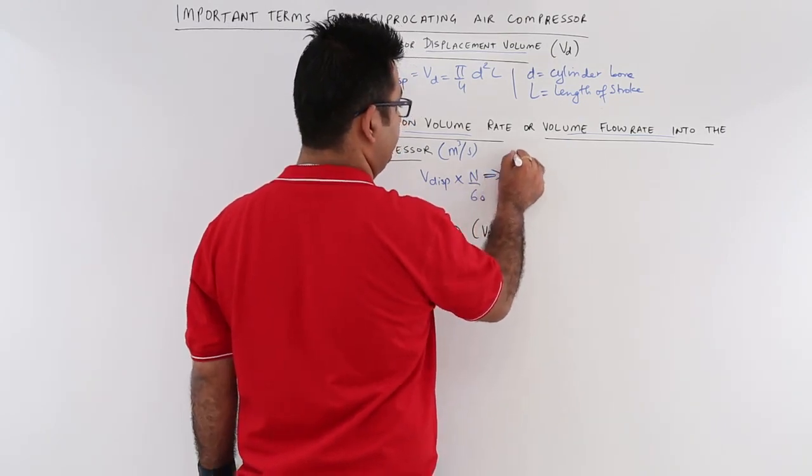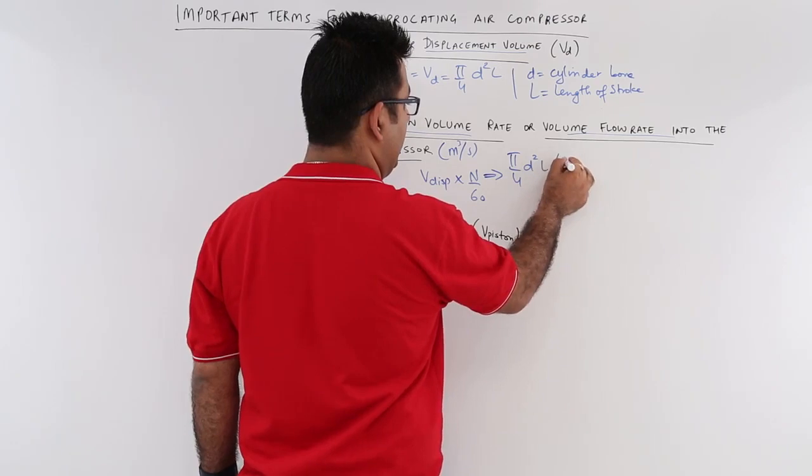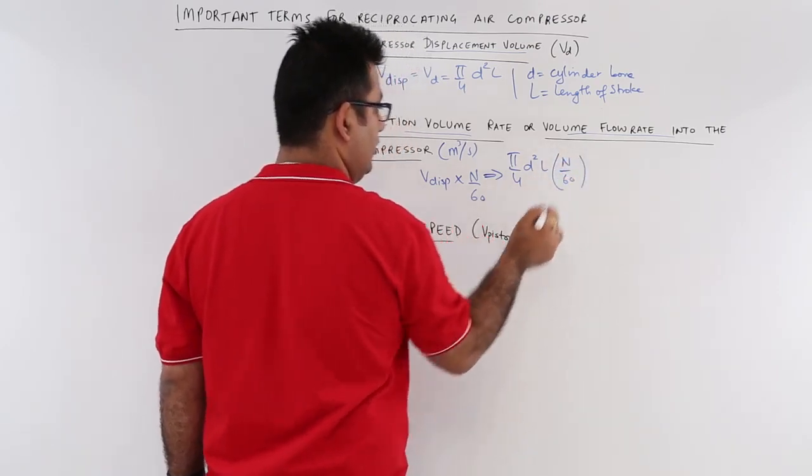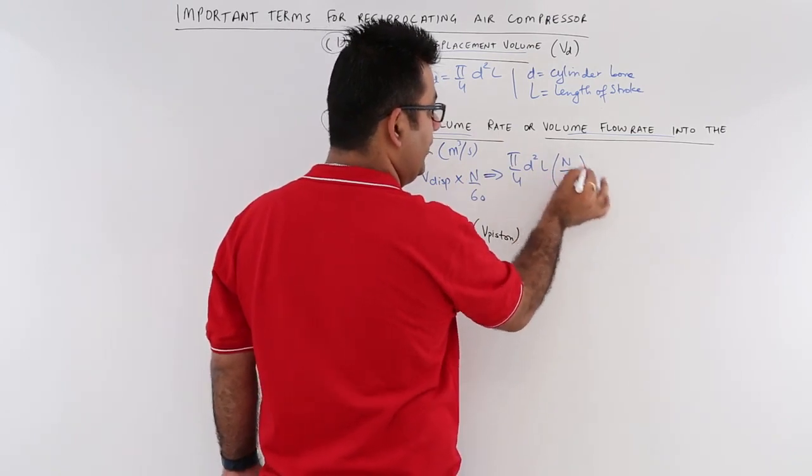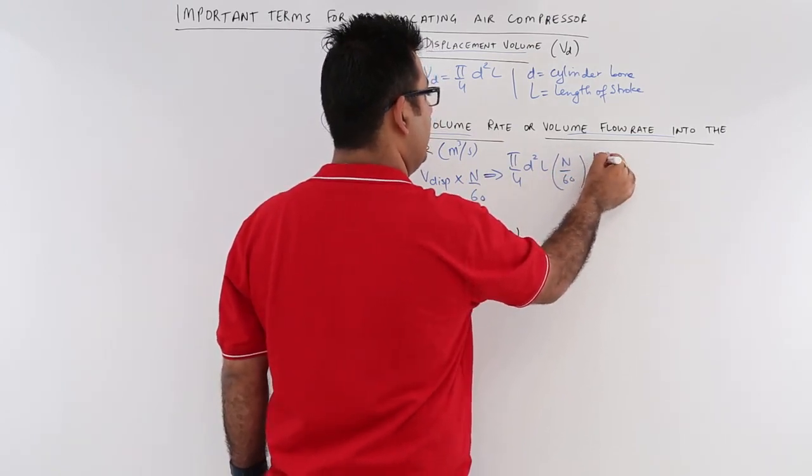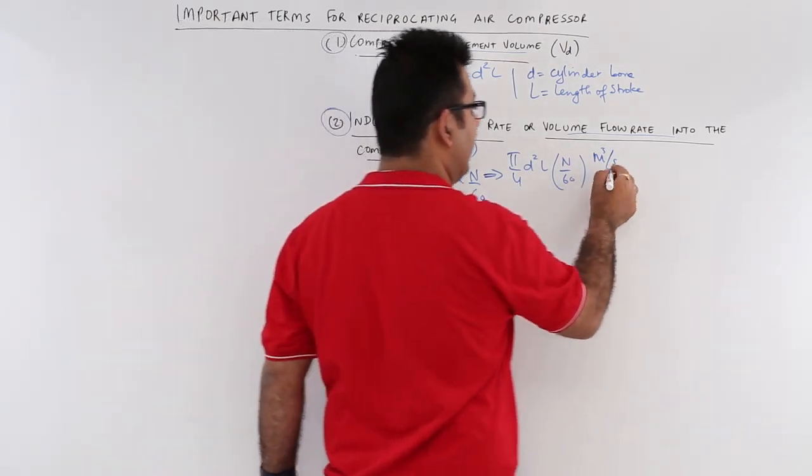So this would become π/4 d² l × n/60. This would give you meter cube and this would give you per second, so this would be meter cube per second. Now this is for single acting.